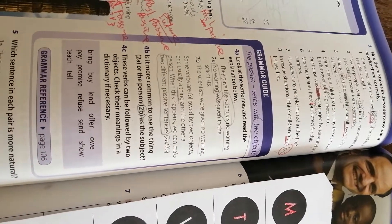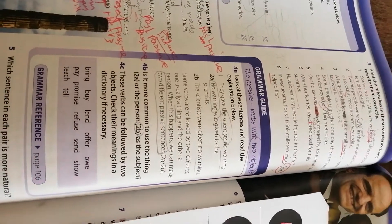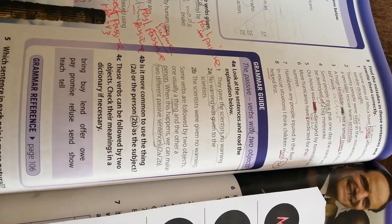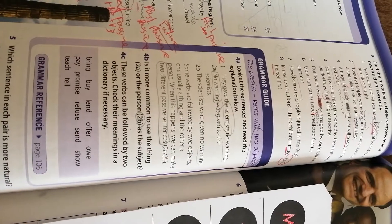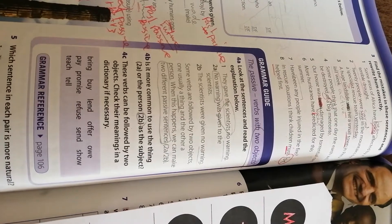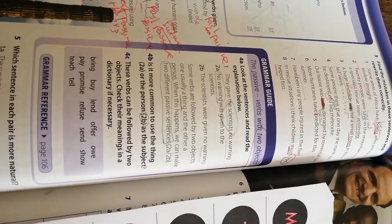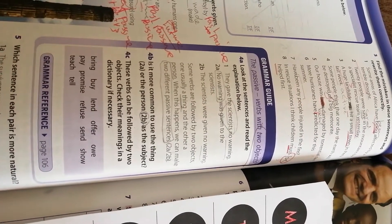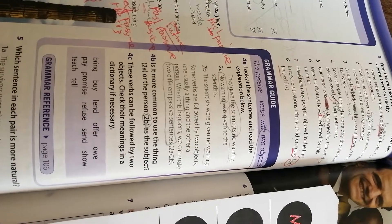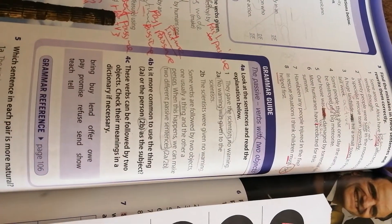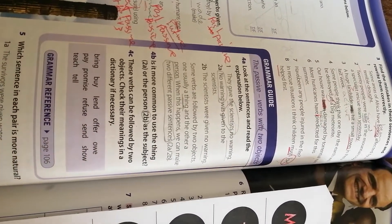Verbs with two objects. In this case, the two objects can be a person and it can be a thing. The two objects can be a person or a thing. And this is called in English, direct object and indirect object. In most cases, the thing is the direct object and the person is indirect object. When, for example, I say, my mom made me a cake. The cake is the direct object, whereas me is the indirect object.